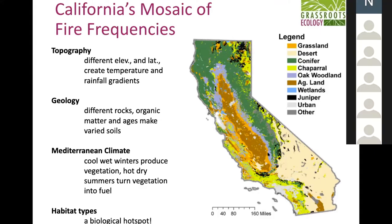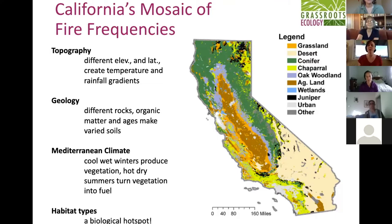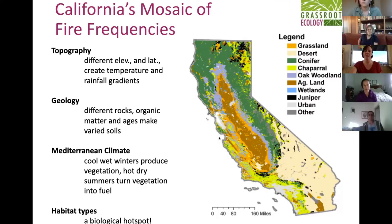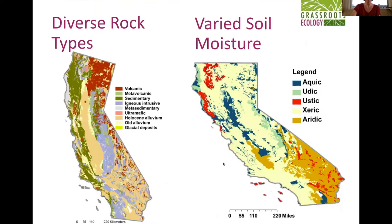Topography plays a part — as you go up in elevation you get snowpack and different habitat types. Geology affects soil, which affects the plants that grow on it. With our Mediterranean climate and coastal influence, fog comes in and has a moderating cooling effect along the coast, but past the coastal rangelands it transitions into a much drier, hotter inner valley, and as you go south that changes as well.